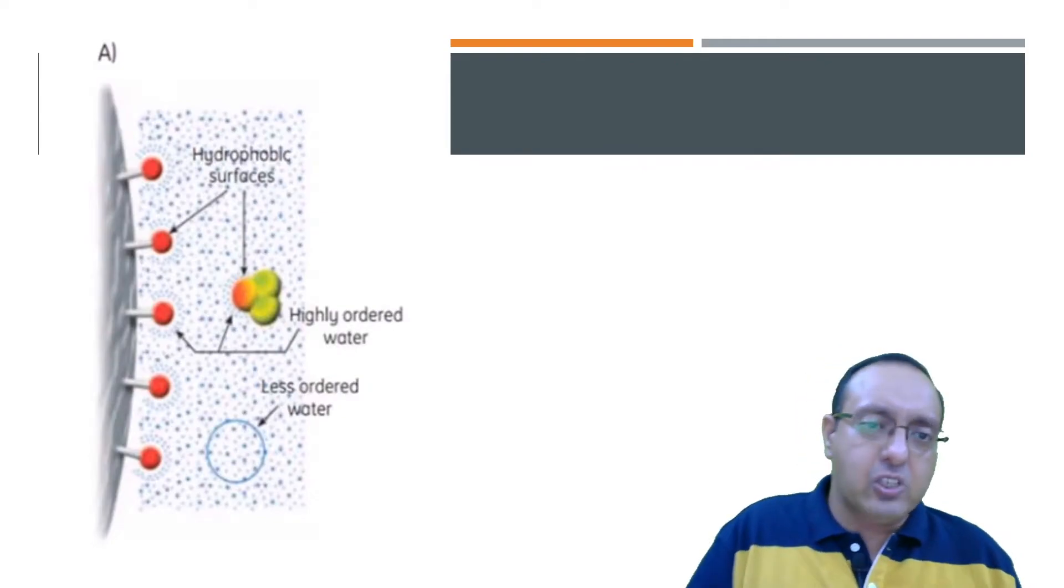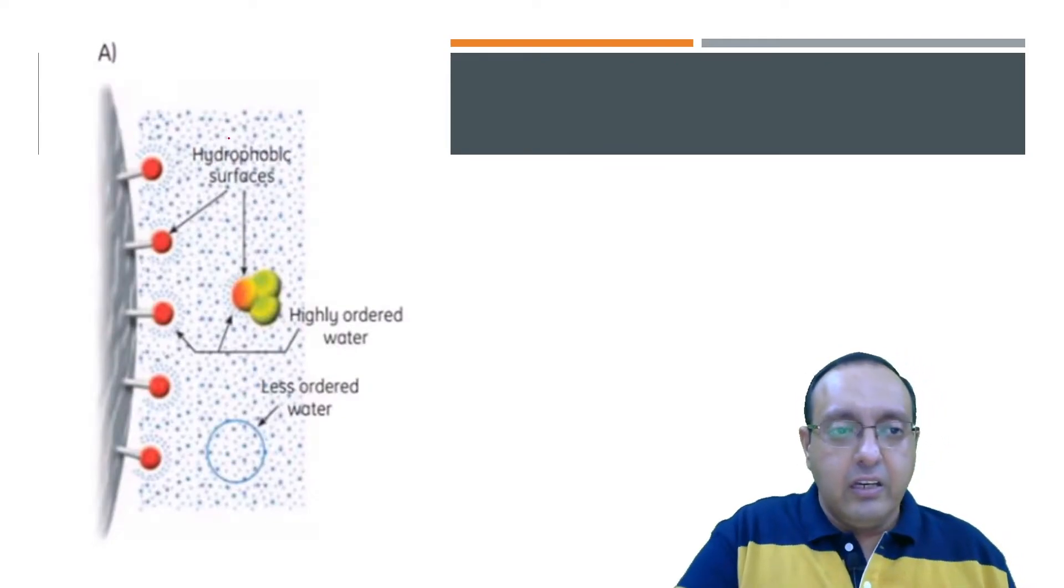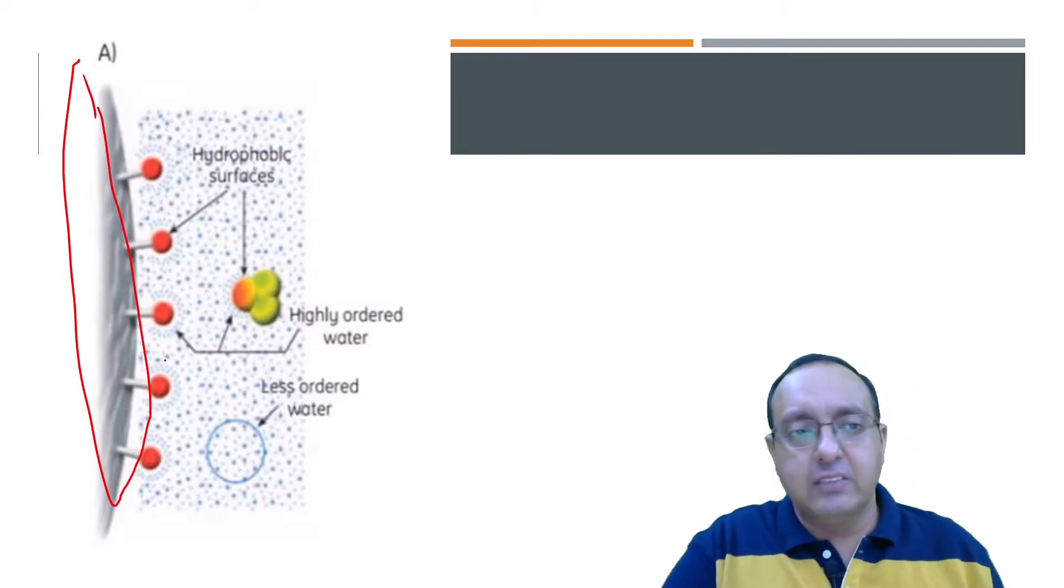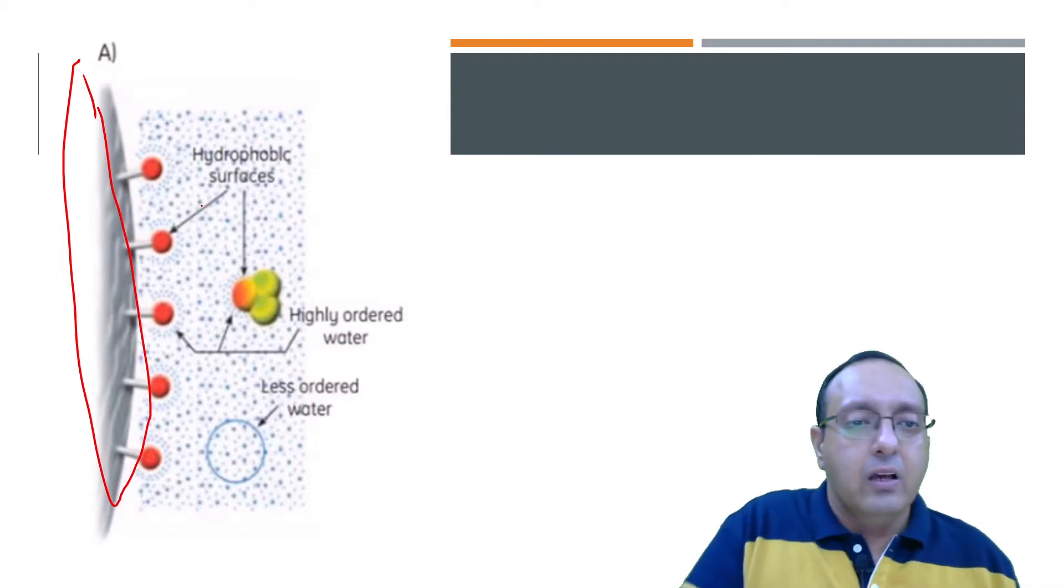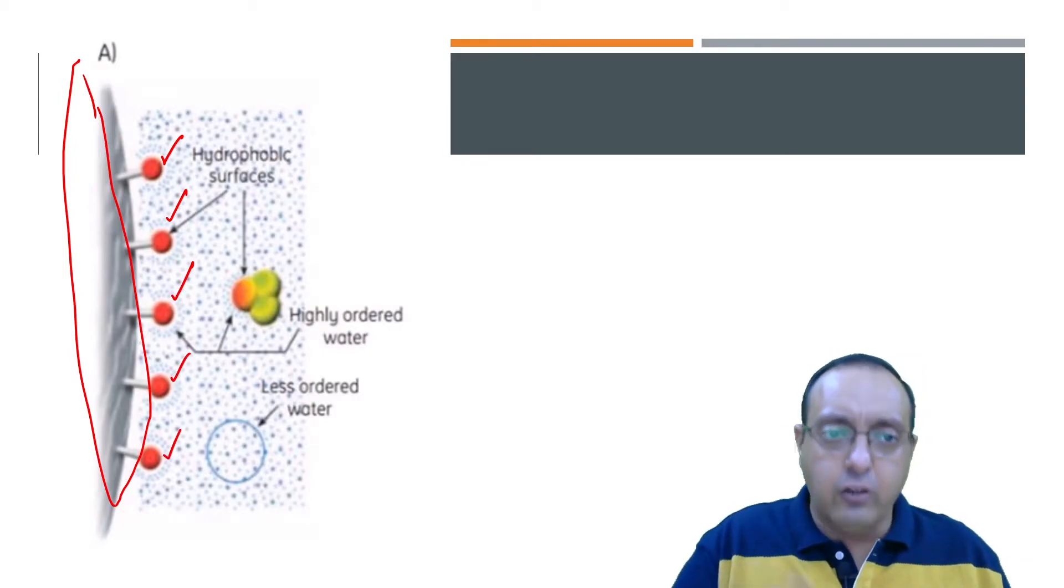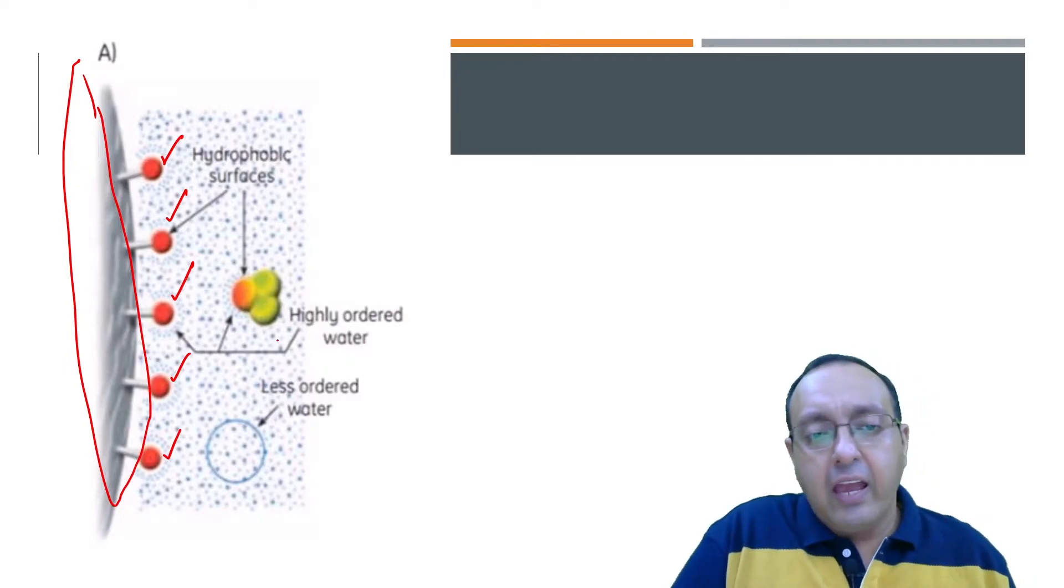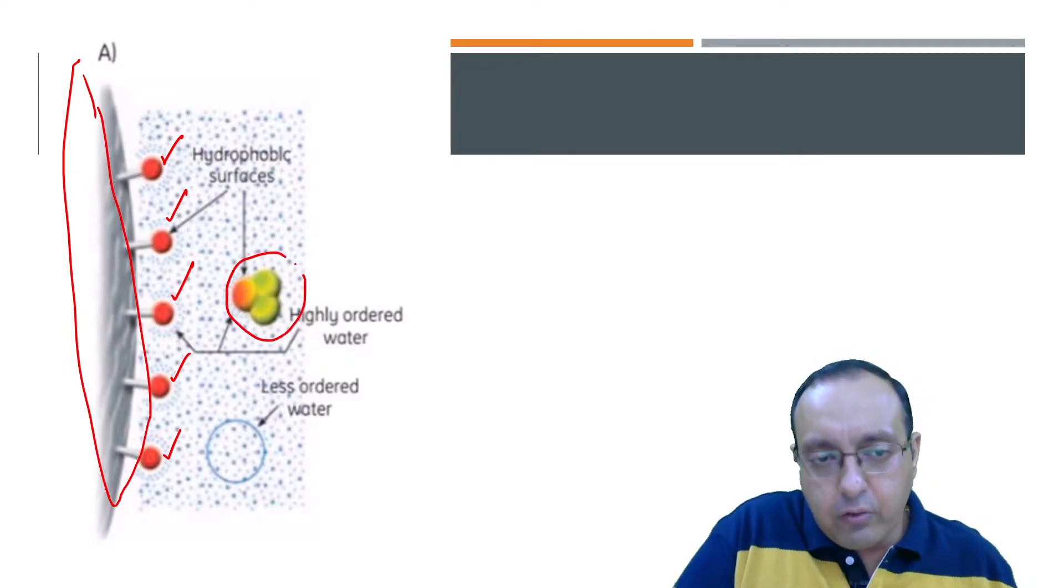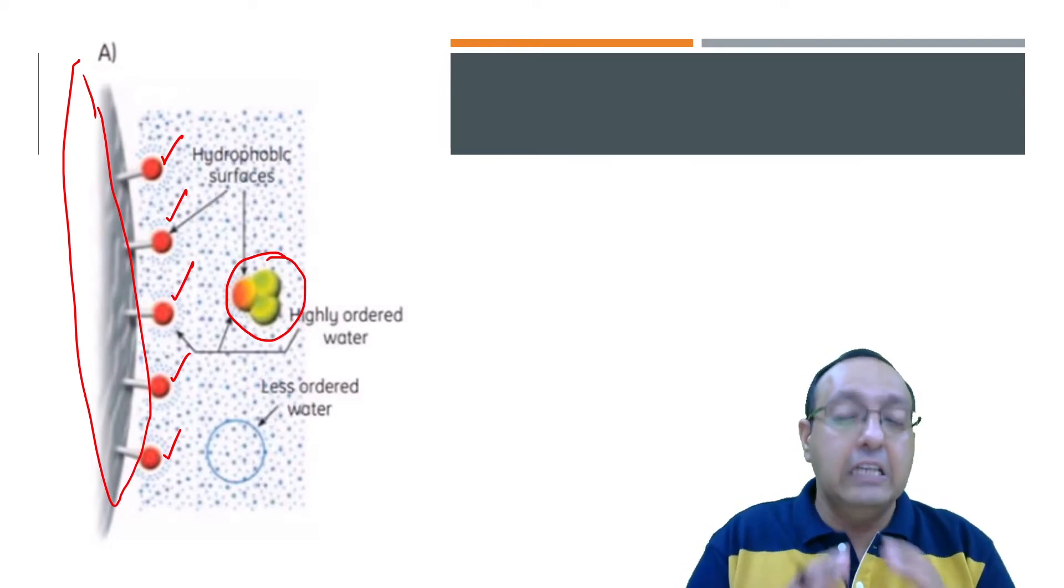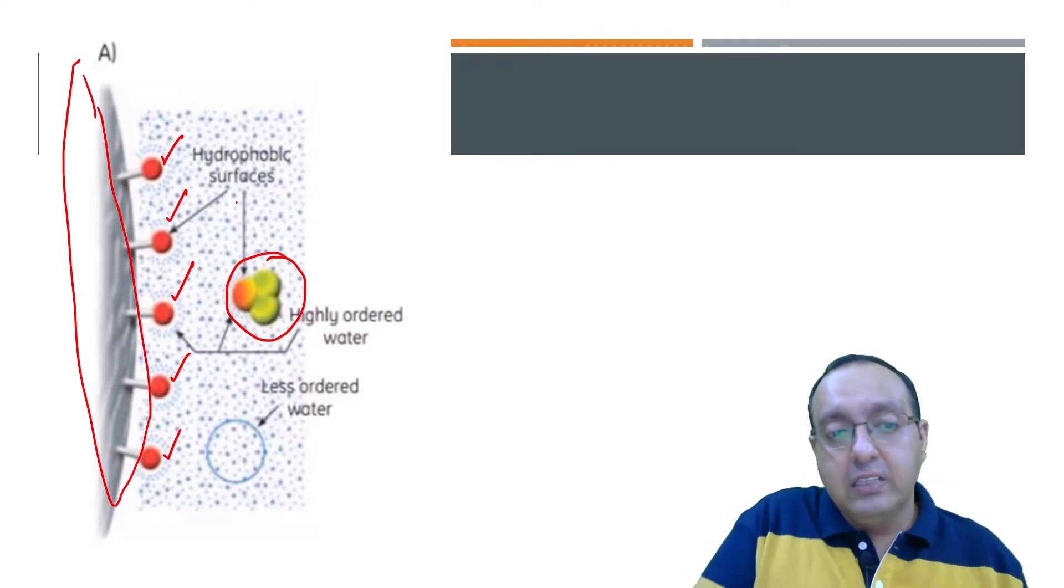Now here is a depiction of what is actually happening at the molecular level. Here is the stationary phase shown in this diagram as this gray bead. It has hydrophobic surfaces. Now these are the groups attached to the beads. These are hydrophobic groups which we'll discuss in a minute. And we have this protein of interest and it has around it some highly ordered water molecules, which is not a very favorable or sustainable situation to be in.